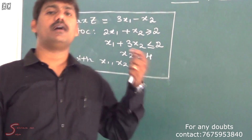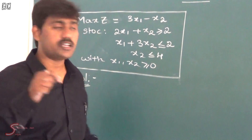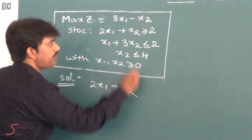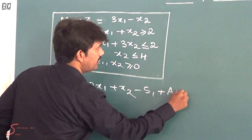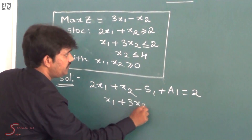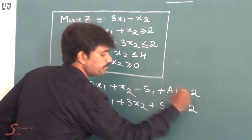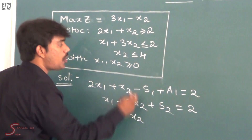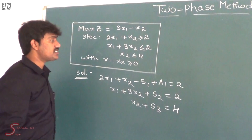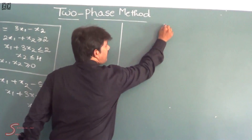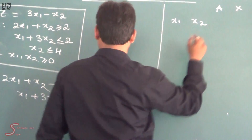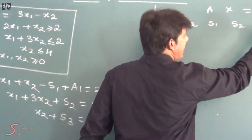For the first step, we change the inequalities into equalities. For the first constraint, which is already an equality, we introduce a surplus variable s1 with coefficient minus 1. For the second constraint, x1 plus 3x2 less than or equal to 2, we add slack variable s2. For the third constraint, x2 less than or equal to 4, we add slack variable s3.